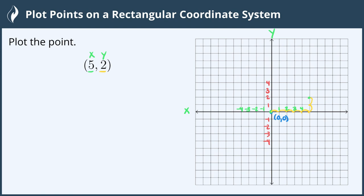Now where we land this is where we plot our point. And we can label it as 5, 2. And now we're all done.